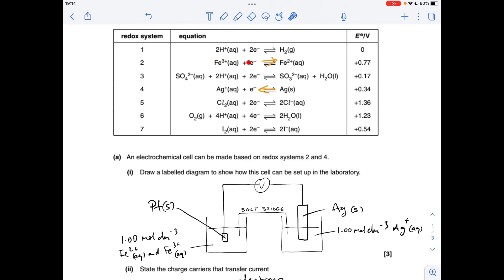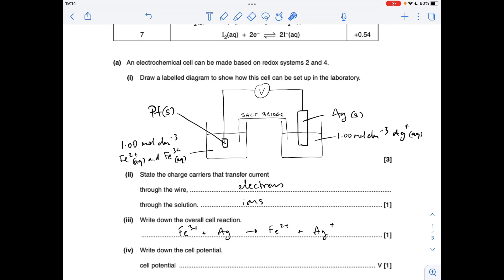So the Fe3+ Fe2+ runs left to right and the silver Ag+ goes right to left. Same number of electrons so we don't need to multiply anything out. That gives us that equation there and the cell potential is the most positive minus the least, 0.43 volts.